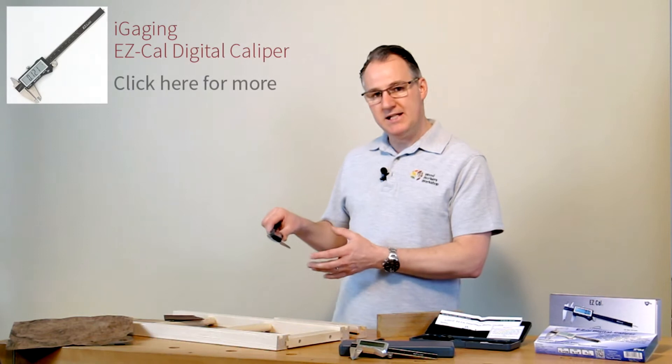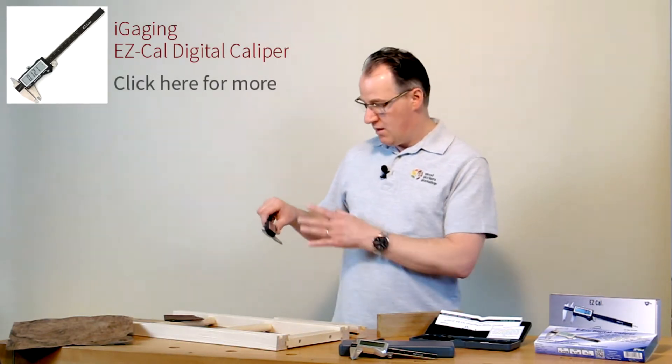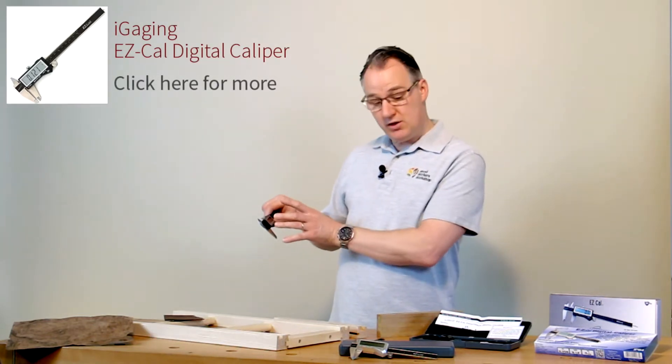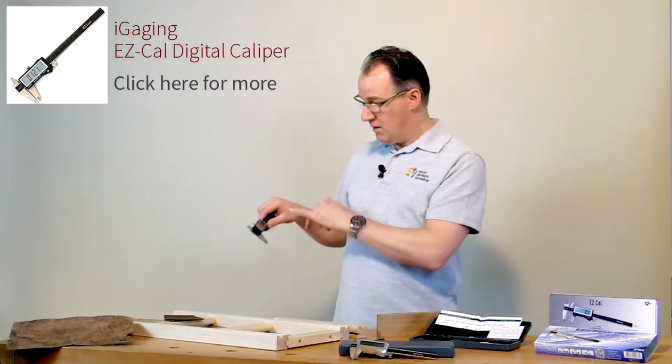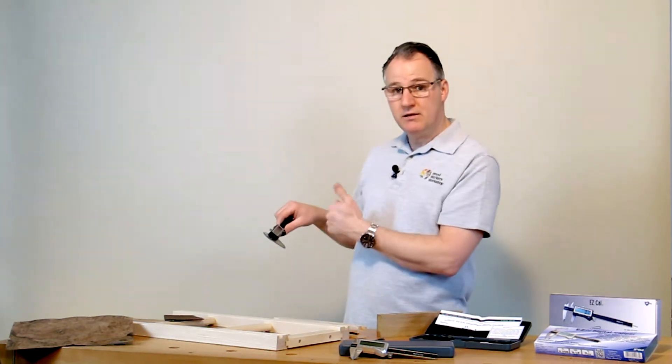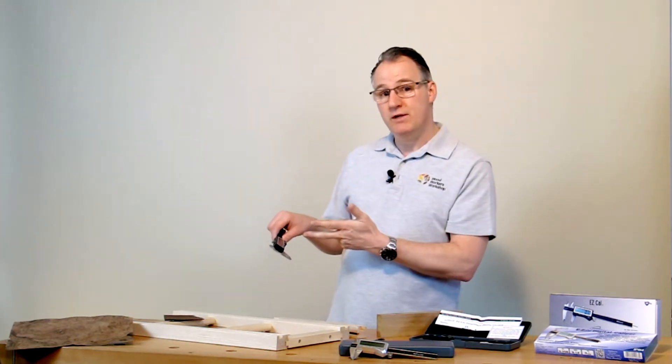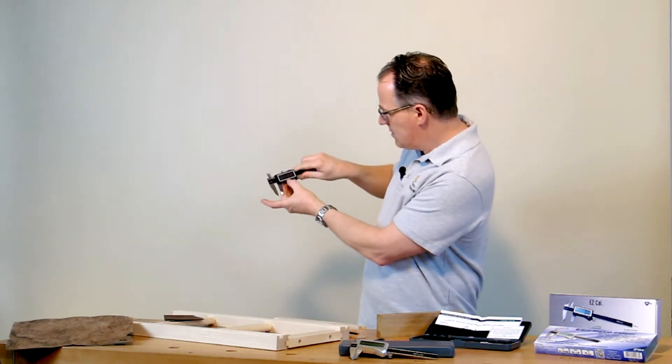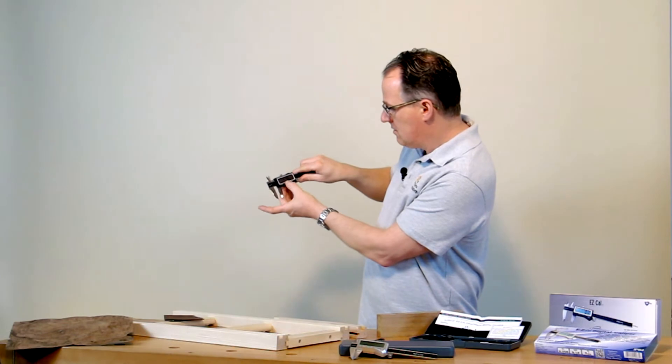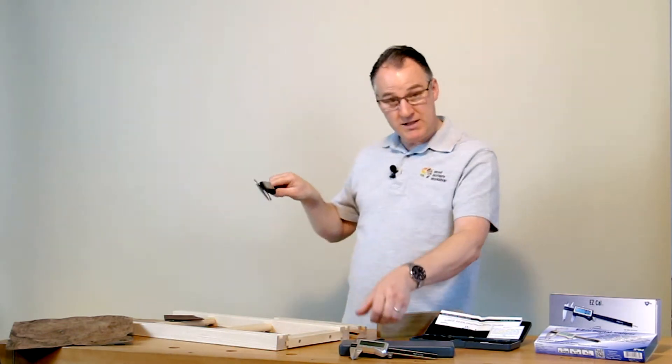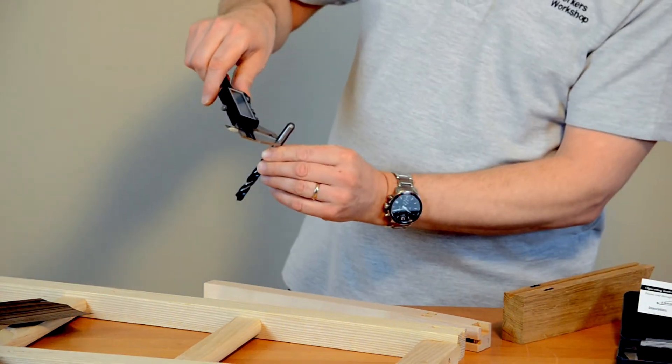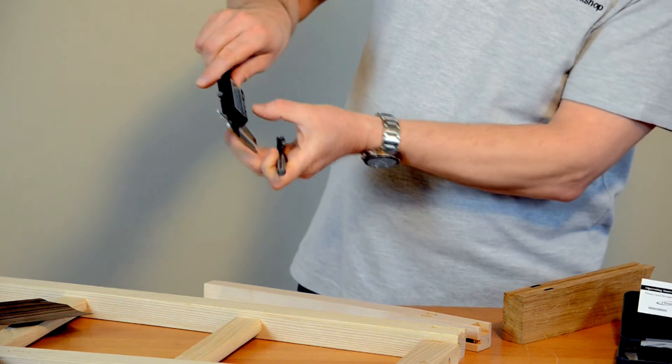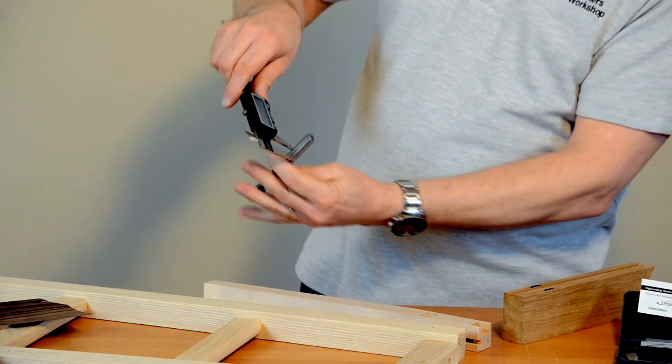These are the i-Gaging EasyCal Digital Calipers available in either a 6 inch or a 4 inch version. These are metric, imperial and also read fractions just for the flip of a switch. So millimeters, inches and fractions which means it's so easy if you want to check things like your drill bits or put them back to millimeters again.